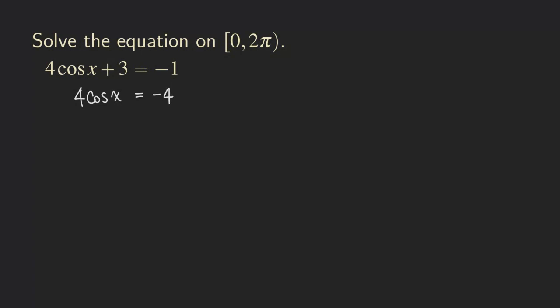The next step is to get rid of the 4 in front of the cosine x. We can divide both sides by 4. I'm not going to show the work here, assuming that if you're watching this video, you probably know the basic algebra of solving a linear equation. Dividing by 4, this negative 4 divided by 4 will give you negative 1. So now the cosine x is isolated.